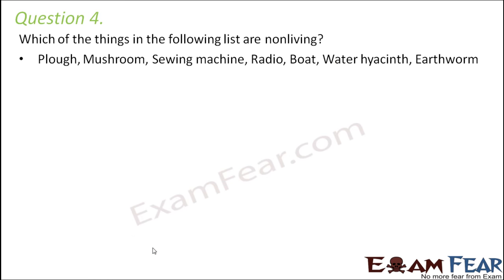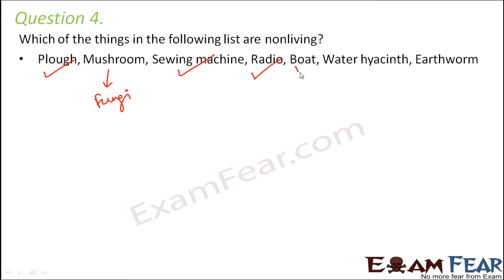Question number four: which of the things in the following list are non-living? A plow is obviously non-living because it is a tool used in agriculture. Mushroom is a fungi — it is a living organism. A sewing machine is again a machine; it doesn't have life, it doesn't breathe, it doesn't eat food. So it is non-living. A radio is a machine which produces sound, but it doesn't satisfy the other characteristics of life. A boat is non-living because though it can move from one place to another, it doesn't satisfy the other characteristics of a living organism.